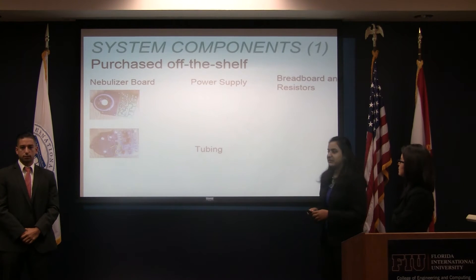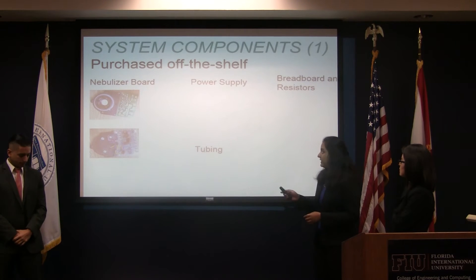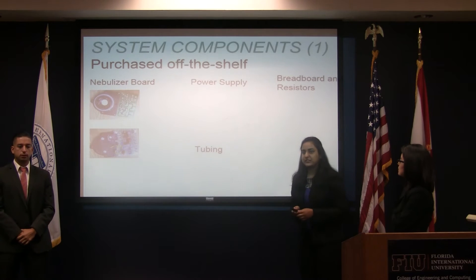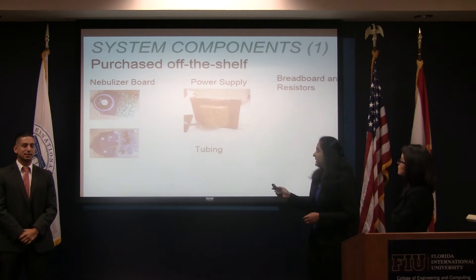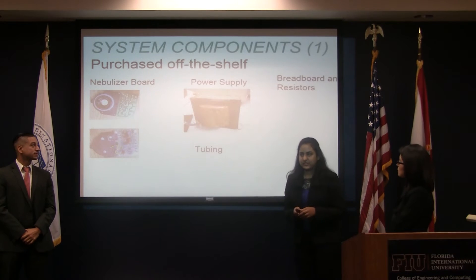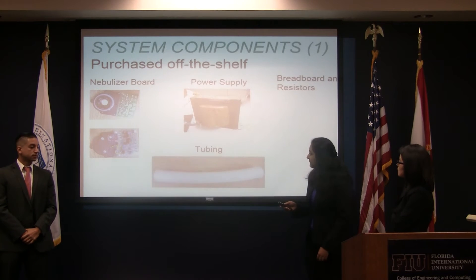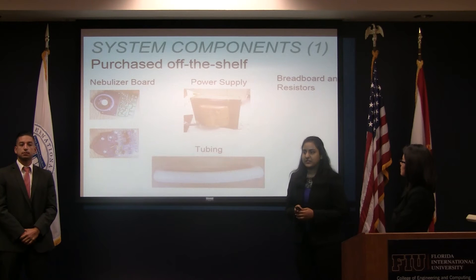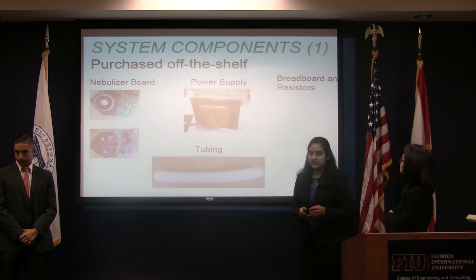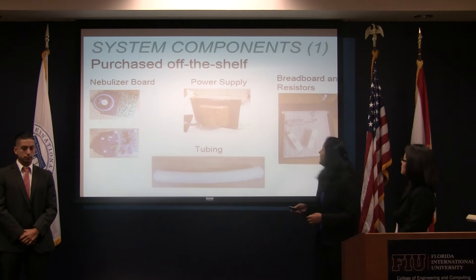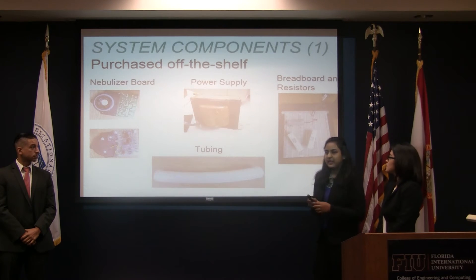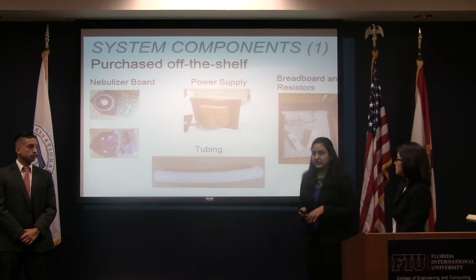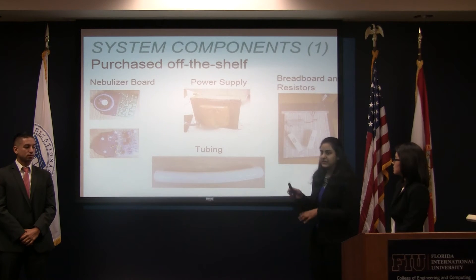We divided the system components into three sections. There are some parts we bought off the shelf: the first is a nebulizer board that runs on a frequency of 1.7 megahertz; the second is the power supply, which has a 48-volt AC for the nebulizer board; the third is crush-resistant, high-temperature silicone rubber tubing; and the last is a breadboard and resistors, which we needed because the power supply wasn't giving us the output we needed, so we used the circuit to bring it down to 48 volts.